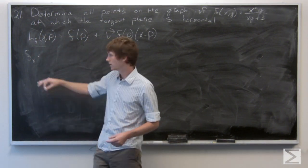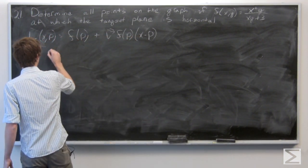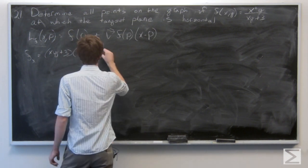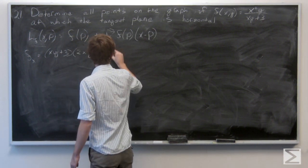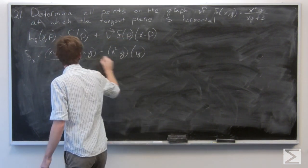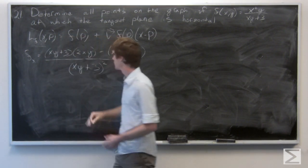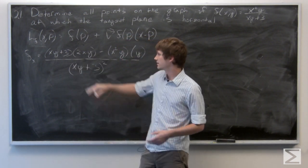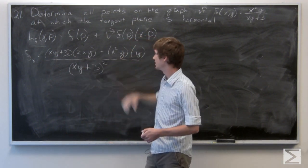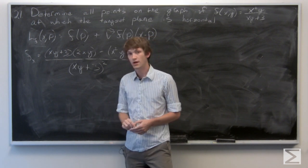To find the gradient vector, we're going to find the partial derivative of f with respect to x. The partial derivative of f with respect to x is the quantity xy plus 3 times 2xy, minus the quantity x squared y times y, all over the quantity xy plus 3 squared.